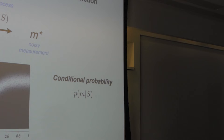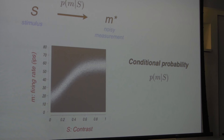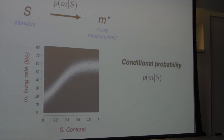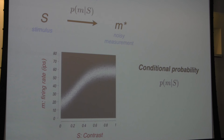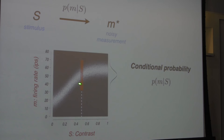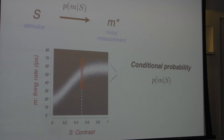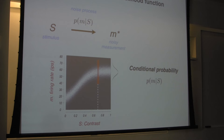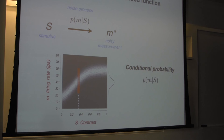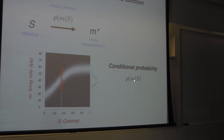I repeat the stimulus over and over and get a distribution of possible firing rates from that neuron. Graphically, the conditional probability is when I know what the stimulus is and I want to know the distribution of measurements. On this plot, it will be a vertical line aligned to a particular stimulus, and here I have the range of measurements — this could be a probability distribution. So that's conditional probability, and when we change the stimulus, that conditional probability will change.